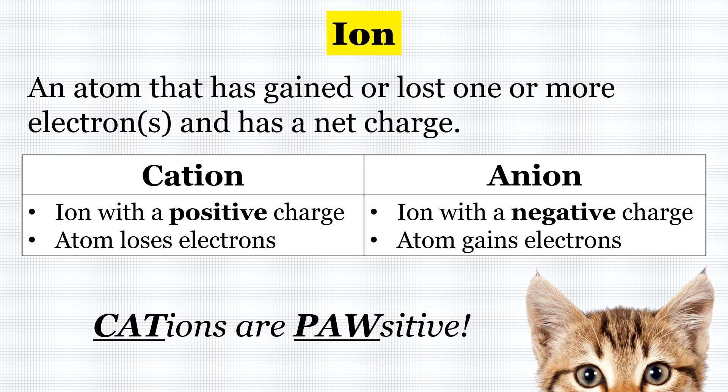In this video, we're going to talk about ions. So what's an ion? An ion is an atom that has gained or lost one or more electrons and has a net charge.